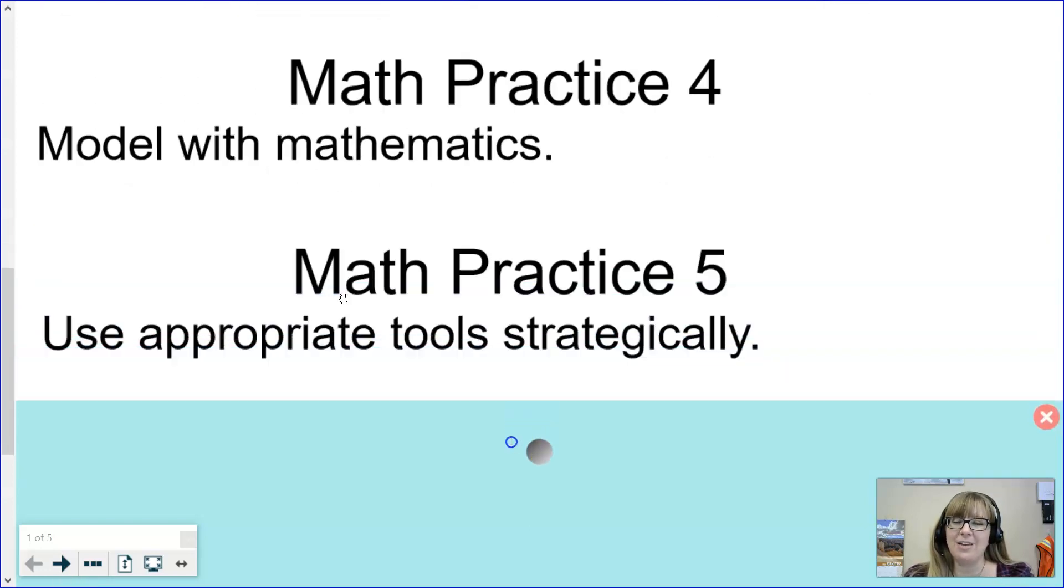Math practice five: use appropriate tools strategically. There are a variety of tools available to us. We need to make sure we're choosing the right ones for the right job. If I have a simple calculation like two times six, it's better to use our brain than to type it into the calculator.